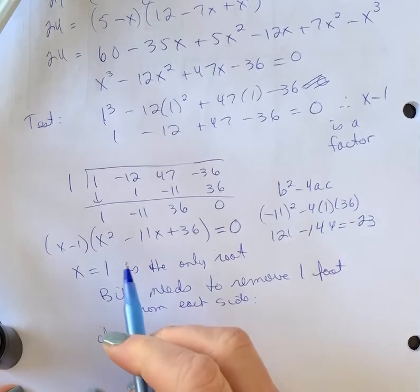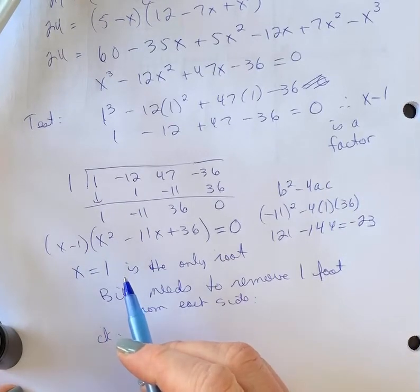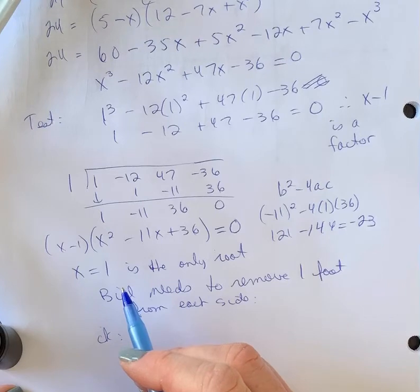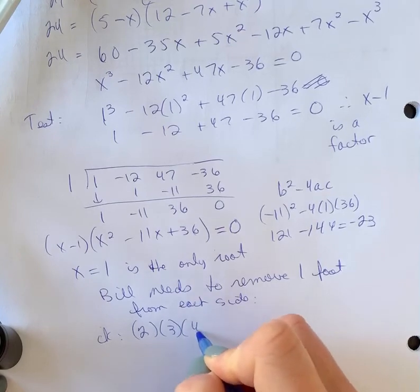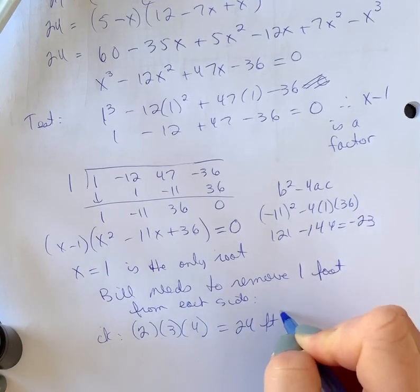If you were to check that and you were to put that back into our original width of 3, 4, and 5, it would now be 2, 3, and 4, which is 24 feet cubed.